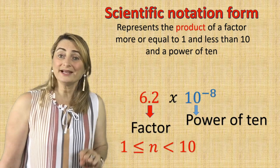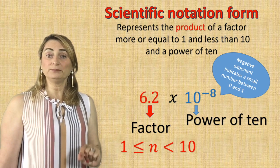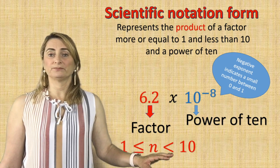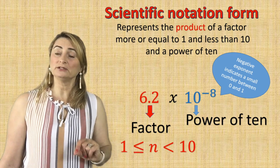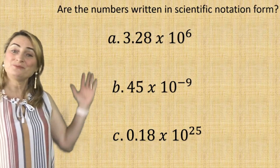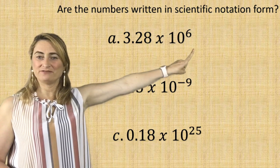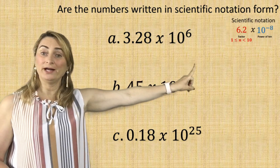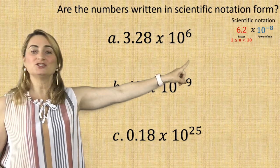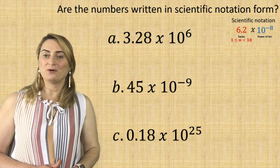If the exponent is negative, that means the number is a small number between 0 and 1. It does not mean this is a negative number — it only means this is a small number between 0 and 1. Keep in mind, scientific notation should have a factor between 1 and 9.999, which means the factor has to be greater than or equal to 1 and less than 10, multiplied by a power of 10.